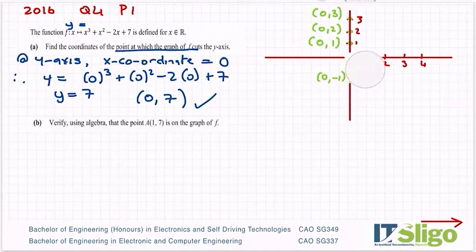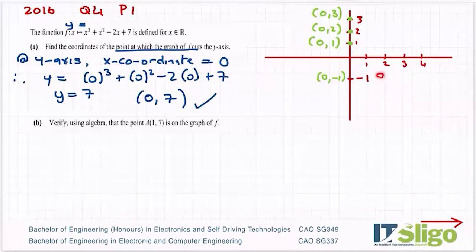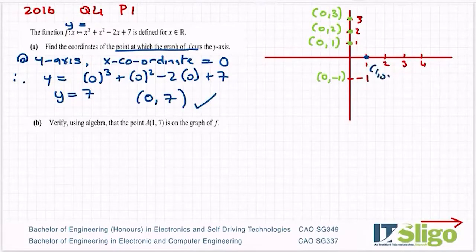Now, as an aside, if I was asked where does it cut through the x-axis? Well, if you think about the coordinates of these points: 1 comma 0, 2 comma 0, 3 comma 0, and so on. So at the x-axis, it's the y-coordinate that's always 0. So I would let the y equal to 0 and solve for x if I was asked where it cuts through the x-axis.